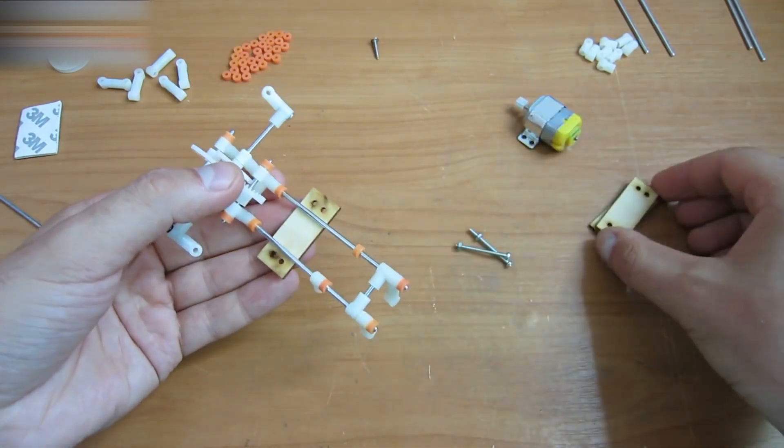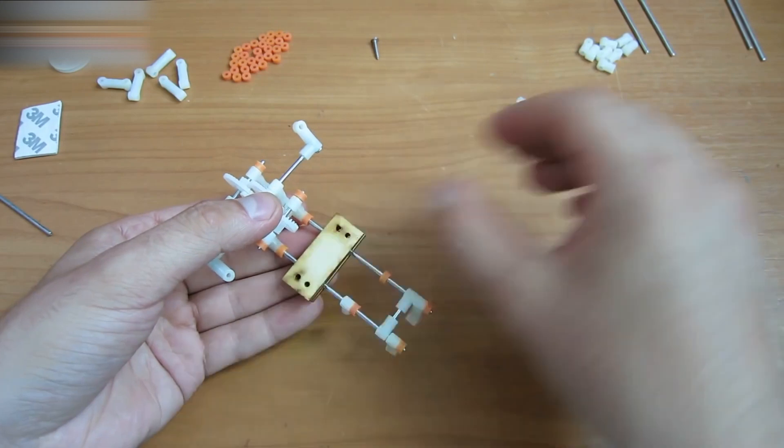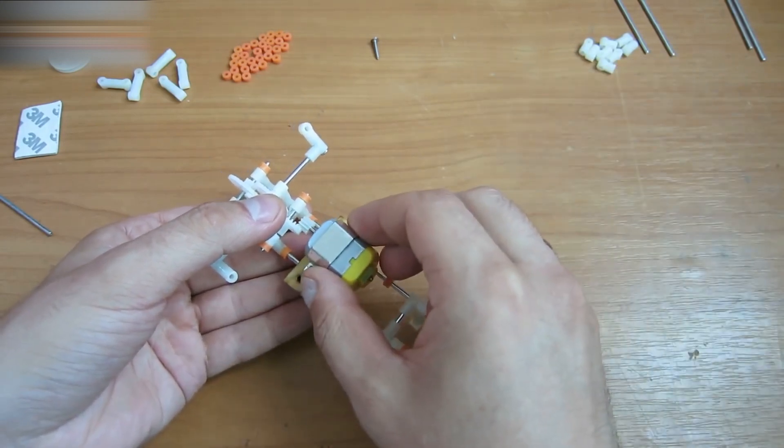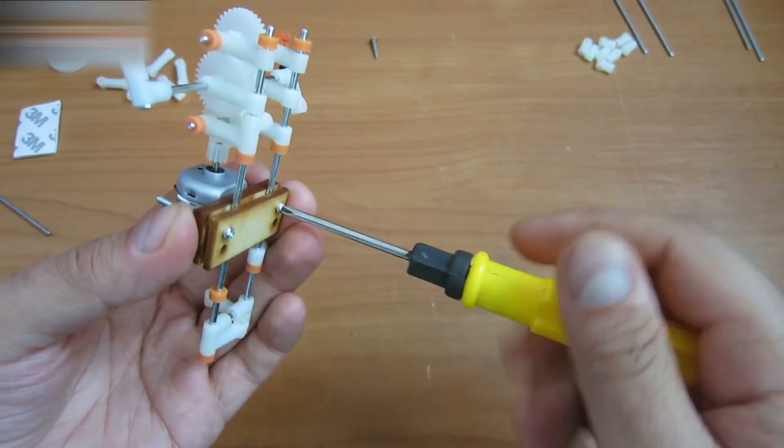Pile up the wooden parts this way and attach the motor there. The screws are included in the kit.